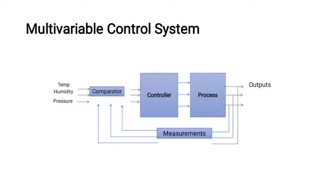A multivariable control system has multiple variables as inputs — for example, temperature, humidity, and pressure. These are given to a comparator, then a controller, then a process, producing output, with measurement taken. Here the input is 3 parameters and the output is also 3, making it a multivariable control system.